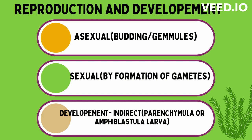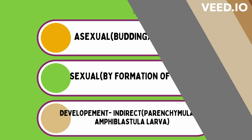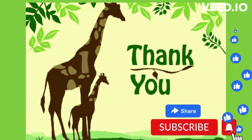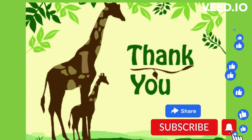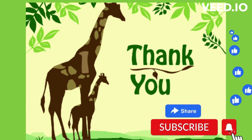Most sponges are hermaphrodite, but there are no organized gonads. Generally, archaeocytes act as gonadocytes and form haploid gametes. In sponges there is generally internal and cross-fertilization. Development is always indirect and includes a free-swimming parenchymula or amphiblastula larva. Hit subscribe for a journey through nature's wonders. This is Professor Ronika Yousuf signing off.